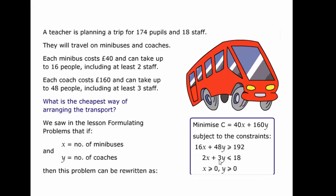The next constraint here is how we allocate the 18 members of staff. We have to have at least two staff in each minibus, and at least three staff in each coach. So we must have at least 2 times x and 3 times y, and because we only have 18 staff, we have to achieve this within the 18 staff. So it's less than or equal to 18.